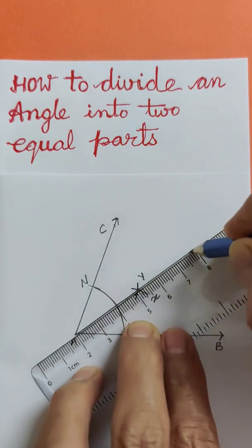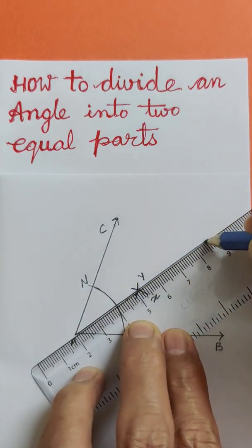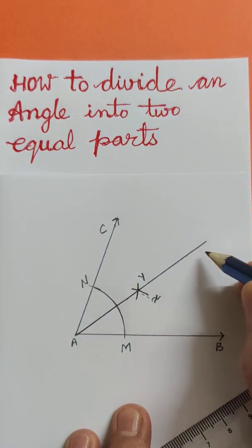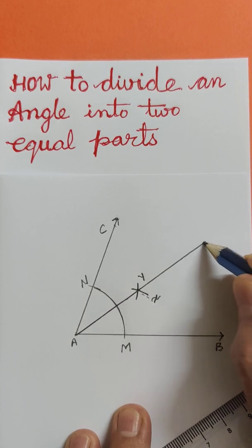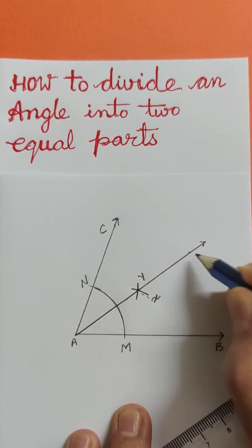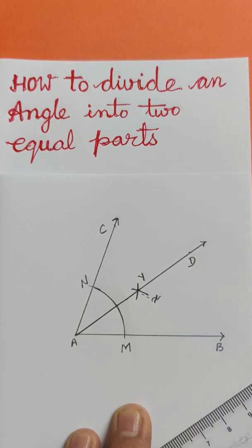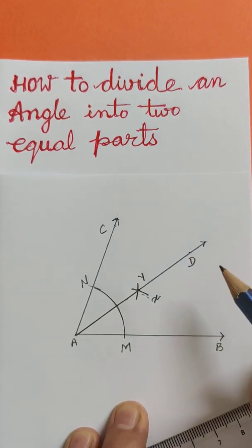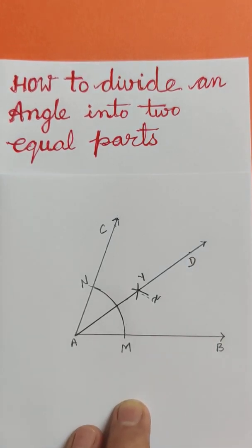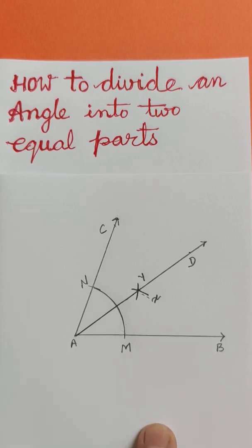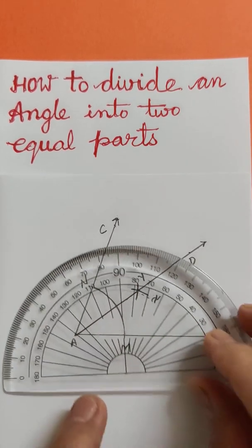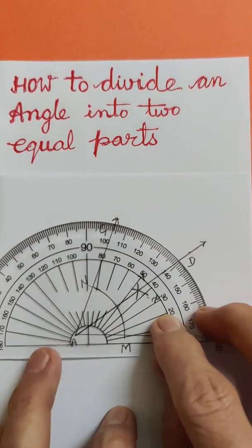We are drawing very carefully so that it should not be rough. Suppose the ray is D. Geometry is a matter of drawing carefully — don't be in a hurry, to get an exact and correct result. Now we shall measure whether it is 35 degrees or not.